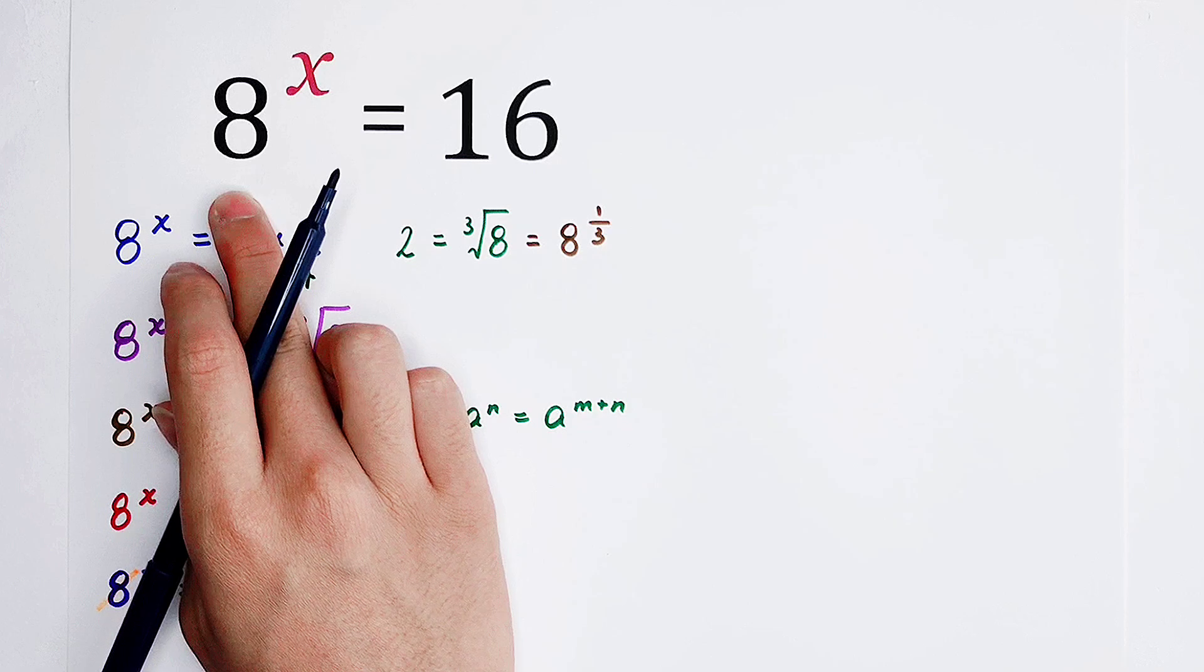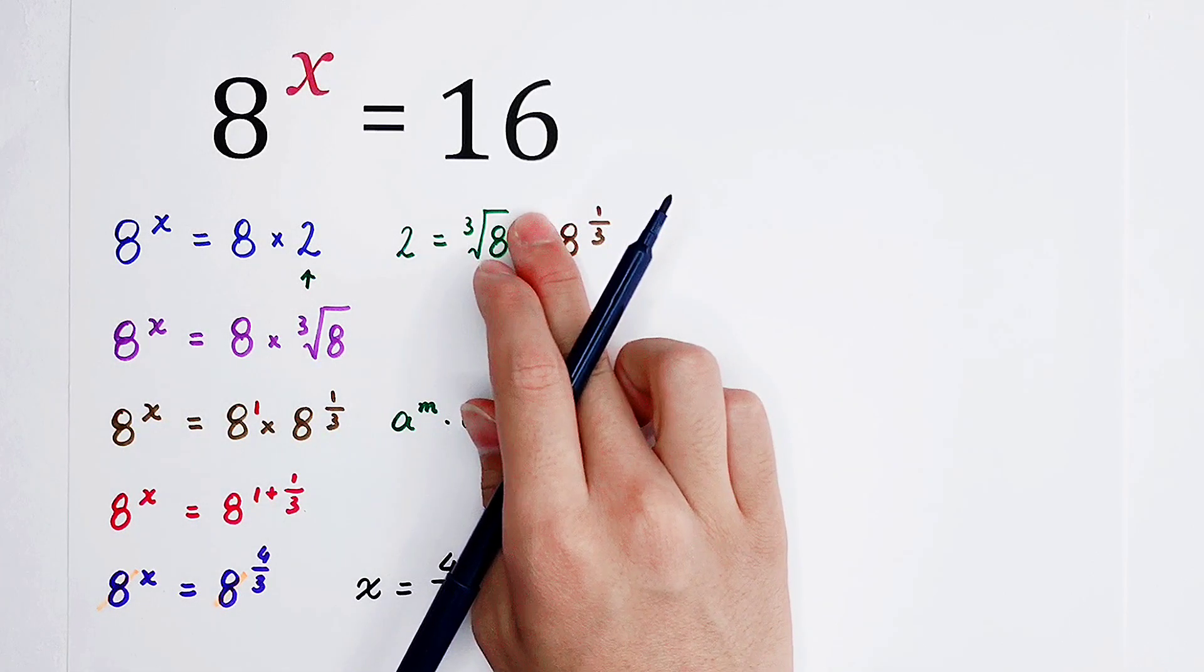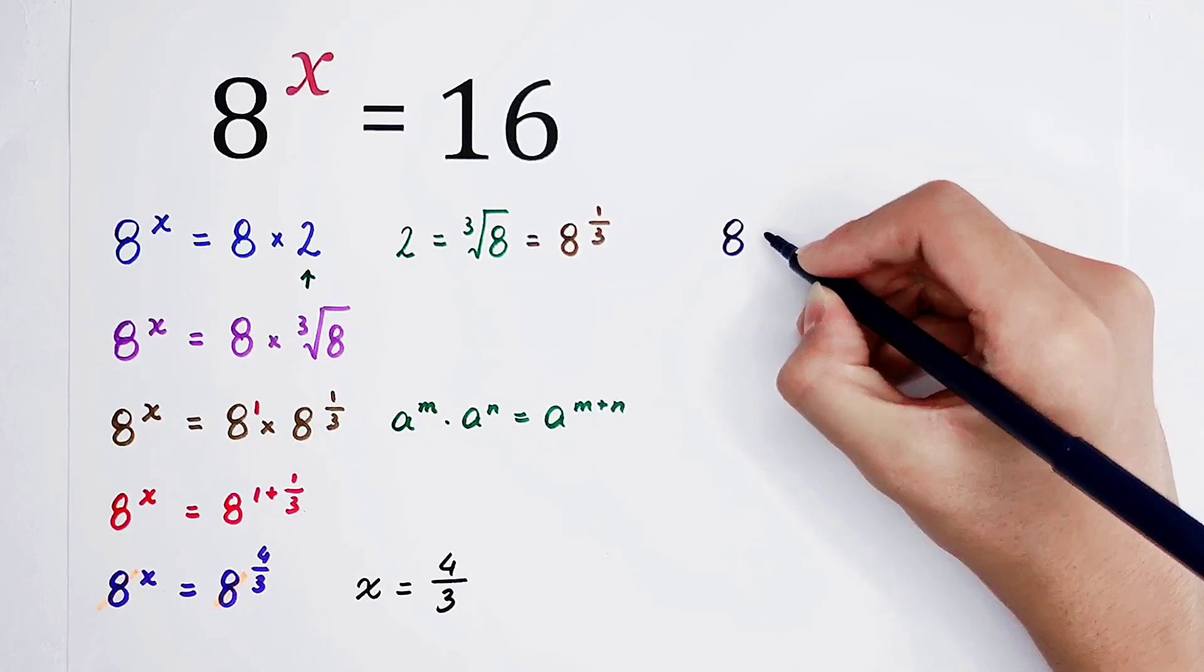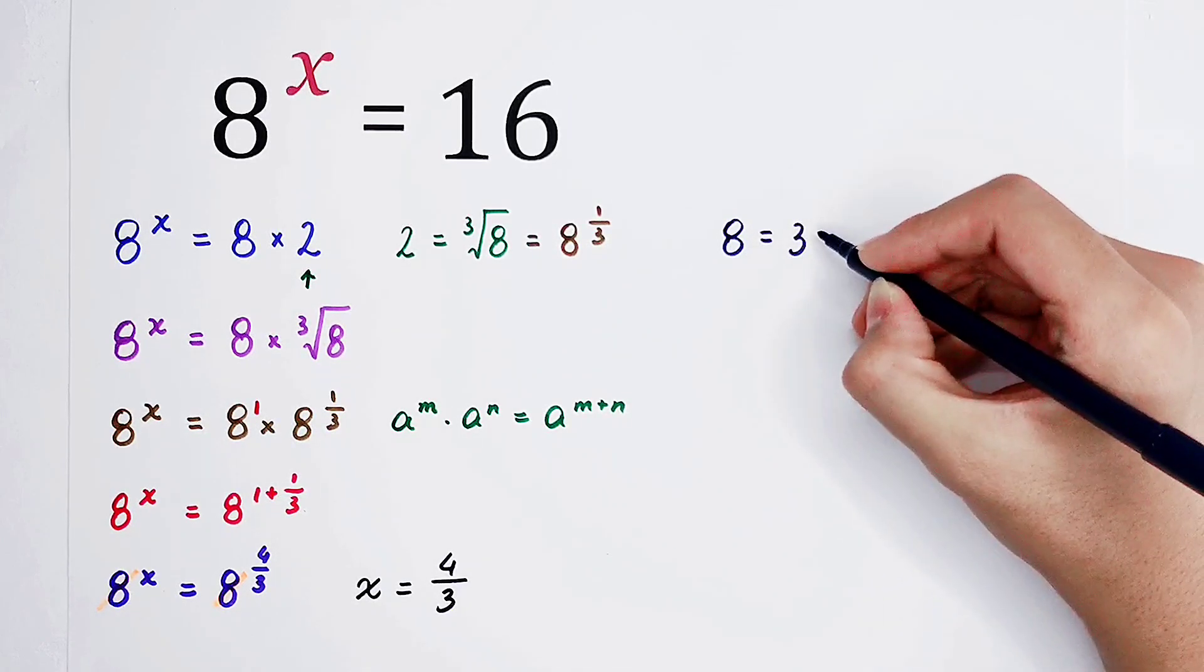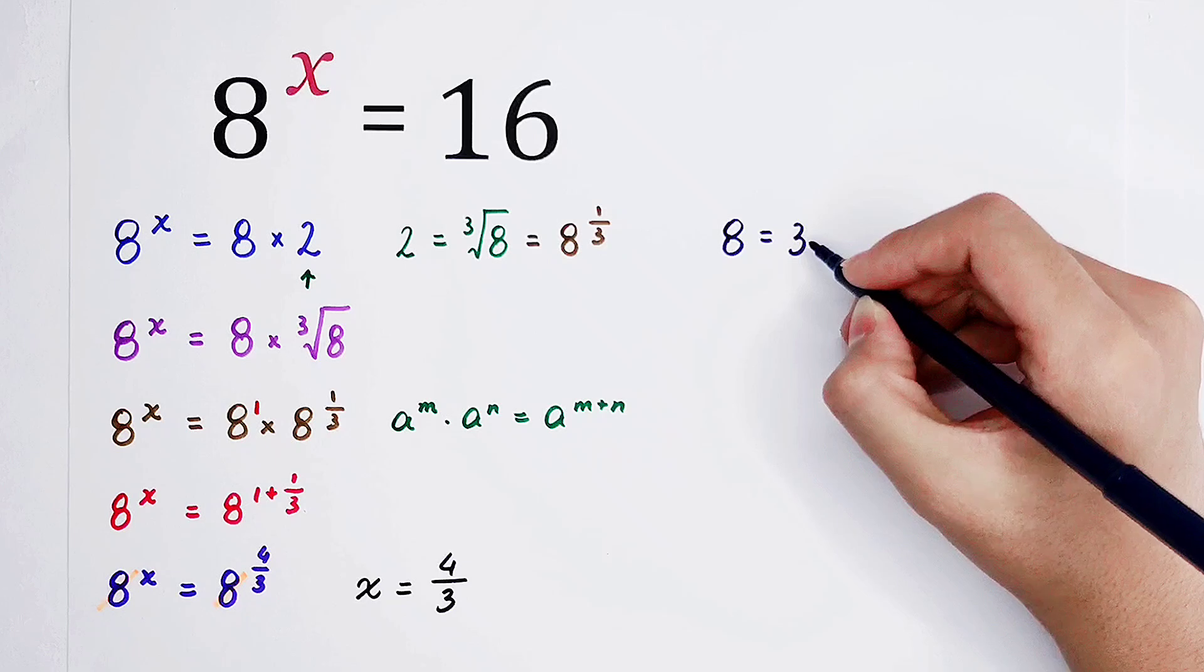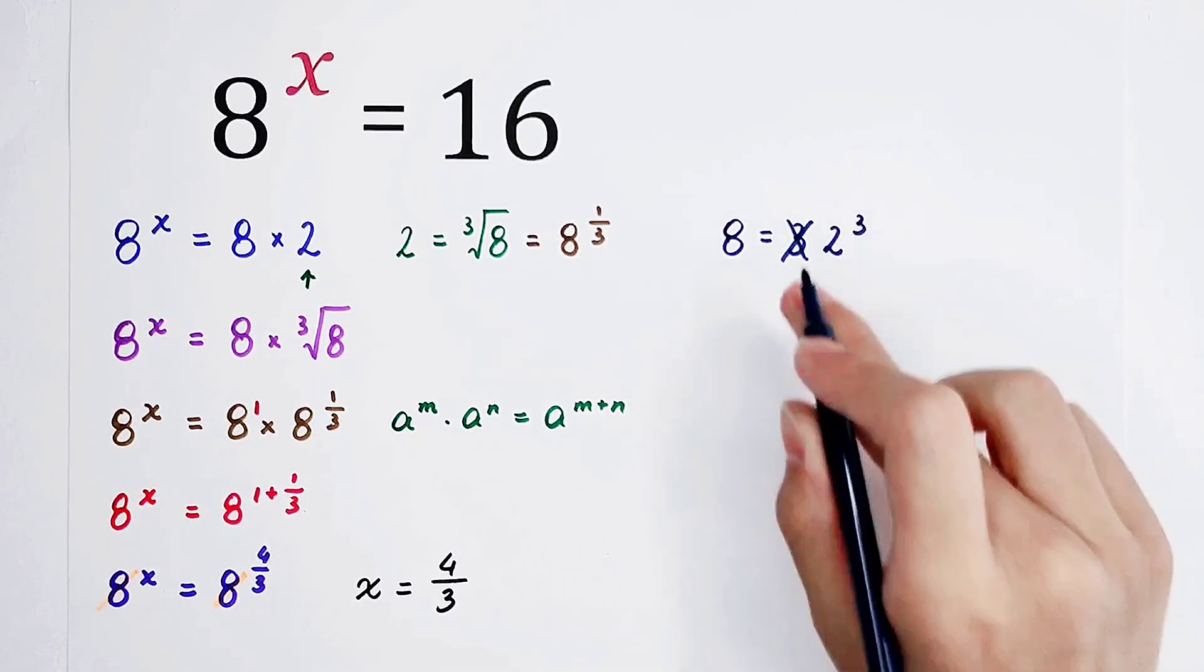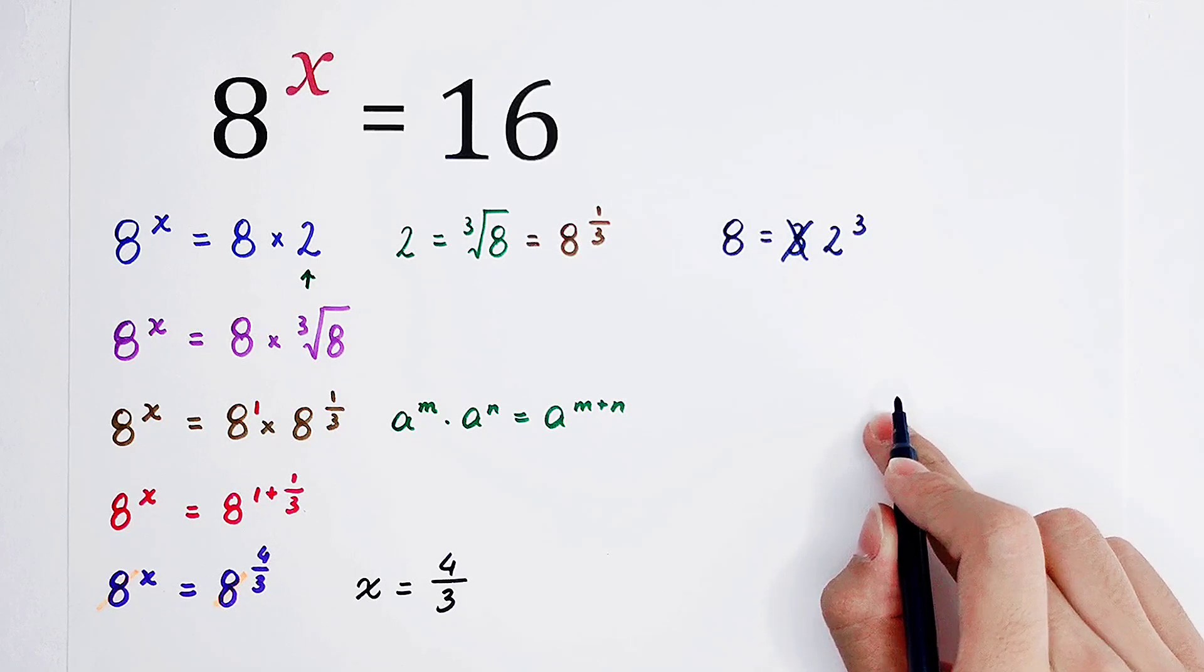8 is 2 to the power of 3, and 16 is 2 to the power of 4. So we noticed that 8, it is... Sorry, my god. My brain is old. It is 2 to the power of 3, not 3 to the power of 2. I should hit myself.